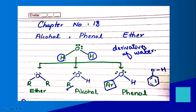If both of the hydrogens are replaced by any aliphatic or aromatic hydrocarbon, these are known as ether. If one of the hydrogen is replaced by any aliphatic hydrocarbon — aliphatic hydrocarbon means a carbon chain, like alkyl groups such as methyl, ethyl, propyl — so that is known as alcohol. And if one of the hydrogen is replaced by any aromatic ring, so this is known as phenol.